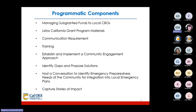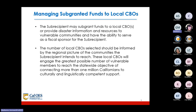Programmatic components include: managing sub-granted funds to local CBOs, Listos California grant program materials, communication requirements, training, establishing and implementing a community engagement approach, identifying gaps and proposing solutions, hosting a conversation to identify emergency preparedness needs of the community for integration into local emergency plans, and capturing stories of impact.